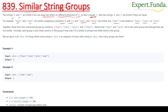'Rats' and 'arts' are similar, but 'star' is not similar to 'tars', 'rats', or 'arts'. Together these form two connected groups by similarity. Notice that 'tars' and 'arts' are in the same group even though they are not directly similar. Each group is such that a word is in a group if and only if it is similar to at least one other word in the group.